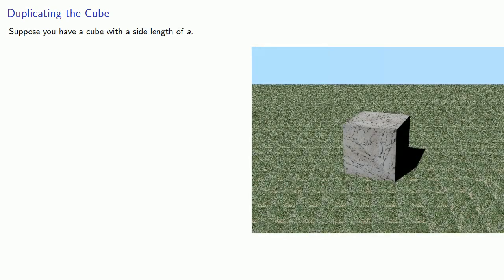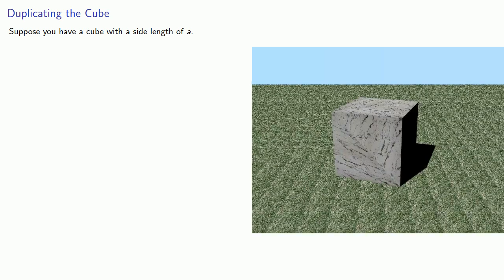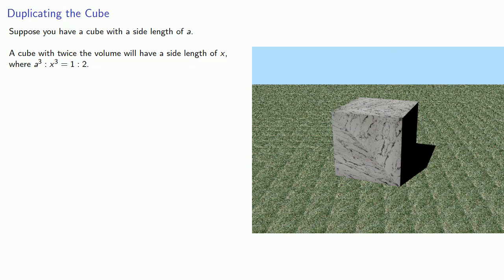Suppose you have a cube with a side length of a. You want to find a cube with twice the volume with a side length of x, where a cubed is to x cubed as 1 is to 2.